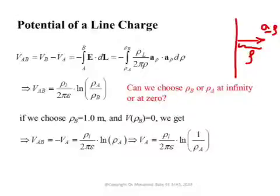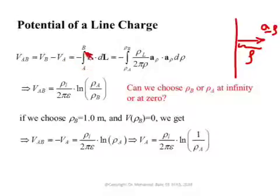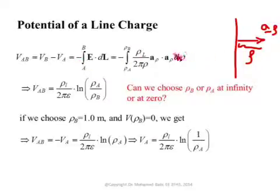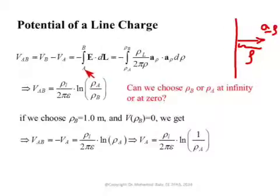If you want to obtain the voltage difference between two points A and B, V_AB is V_B minus V_A. It is equal to the work done against the electric field in moving a point charge from point A to point B. Because it's against the electric field, we put a negative sign outside the integral. We integrate from Rho_A to Rho_B, where Rho_A is the normal distance from point A to the wire, and Rho_B is the normal distance from point B to the charge.